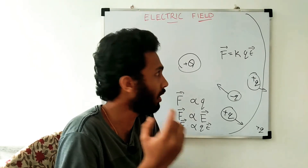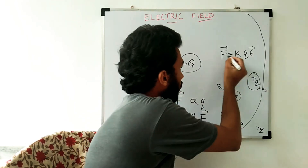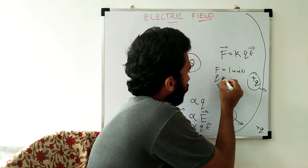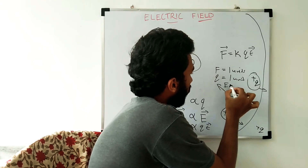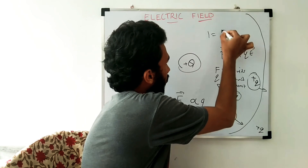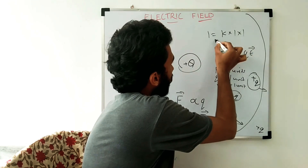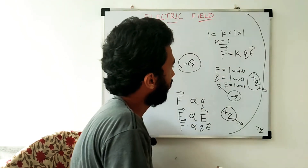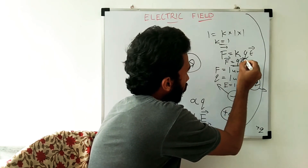We have a constant value. So if we consider one unit — the force is 1 unit, the charge is 1 unit, the electric field is 1 unit — then 1 equals k into q times E, which gives k equals 1. So the equation becomes F equals qE. F-vector is equal to qE-vector.